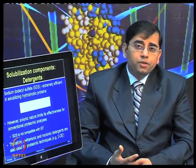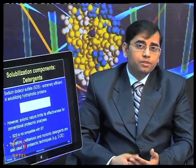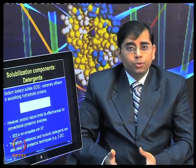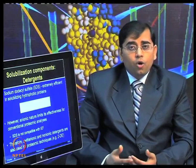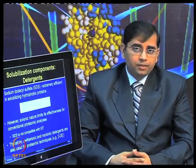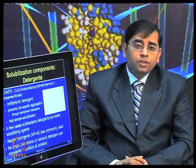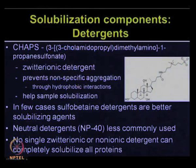When you want to do 2DE, DIGE, or other advanced gel-based proteomic applications where you cannot use SDS, zwitterionic and non-ionic detergents are used. CHAPS, one of the zwitterionic detergents, is most commonly used in protein solubilization when your objective is to perform two-dimensional electrophoresis experiments. It prevents non-specific aggregations through hydrophobic interactions and helps in sample solubilization. Depending upon your sample type, different detergents could be useful.